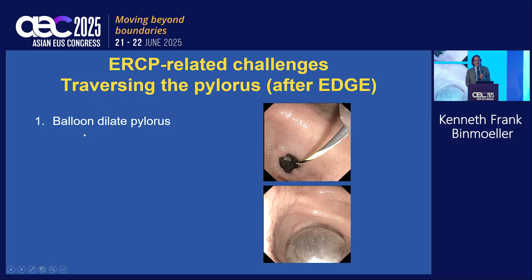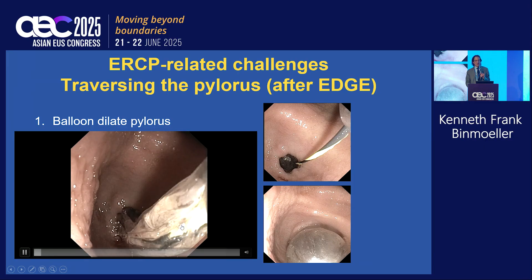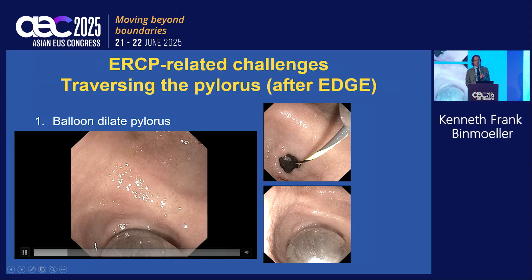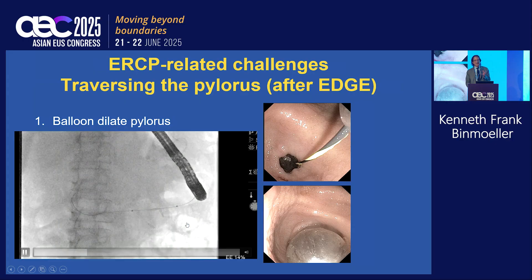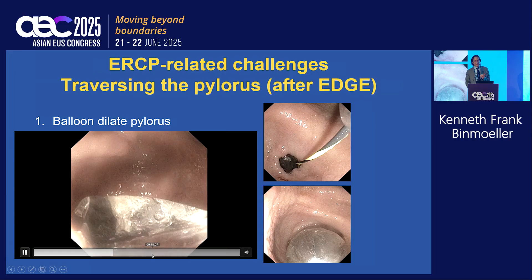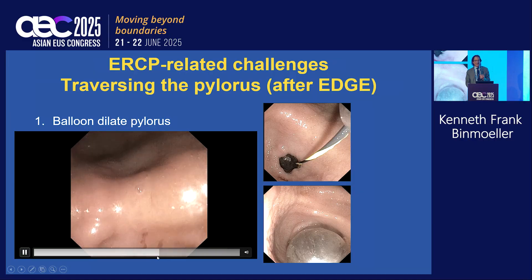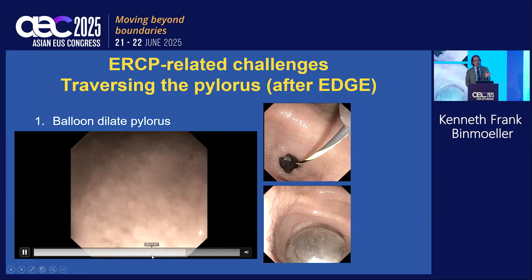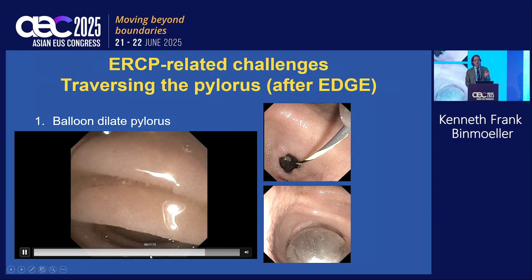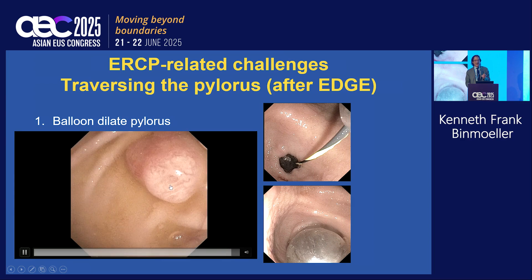After an EDGE procedure, traversing the pylorus can be challenging, especially if you placed your LAMS too distal. What usually works is to dilate the pylorus with a balloon catheter — we use the largest, a 20-millimeter balloon. You can see in this video inflating the balloon. After dilating the pylorus, you can attempt to pass your duodenoscope across. Never push excessively against resistance. With the duodenoscope, we can pass into the bulb and then onwards into the second duodenum, and here you see the papilla.